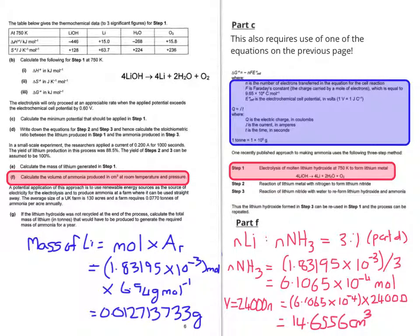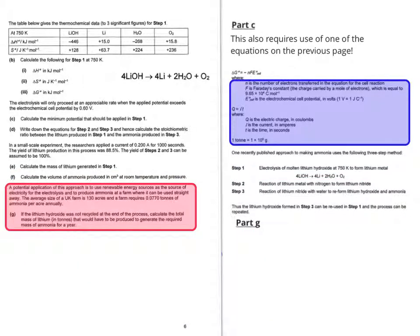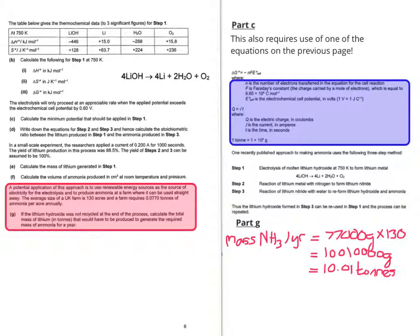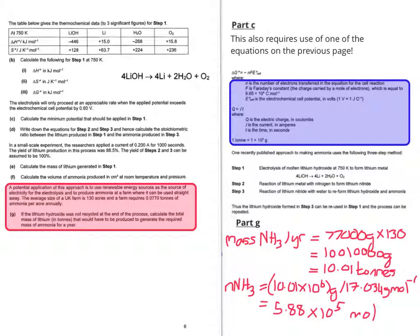So let's now go down to the final question. So in part G, they want us to calculate the total mass of lithium in tonnes that would have to have been produced to generate the required mass of ammonia each year. So per year if we convert the number of tonnes of ammonia required per acre into grams and multiply that by the number of acres which is 130, that gives us 10.01 tonnes. So taking the relative atomic mass values from the chemistry Olympiad periodic table, ammonia ends up as 17.034 grams per mole. So to get the moles of ammonia in 10.01 tonnes you convert back to grams and divide by the grams per mole.